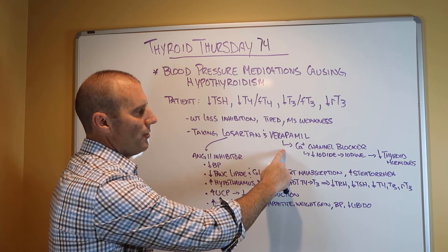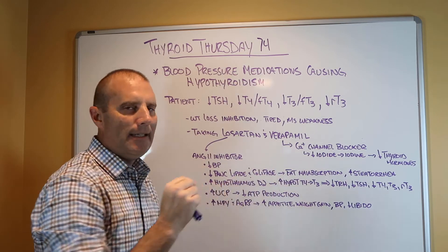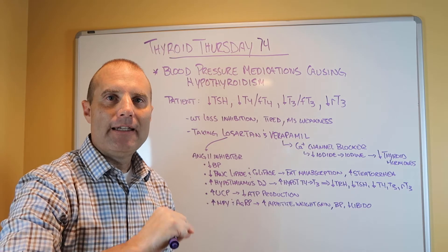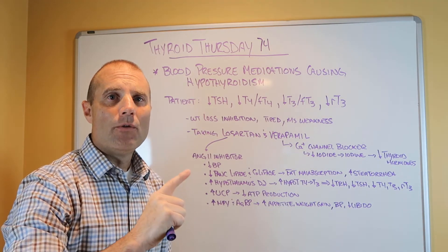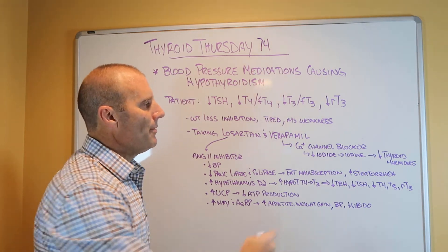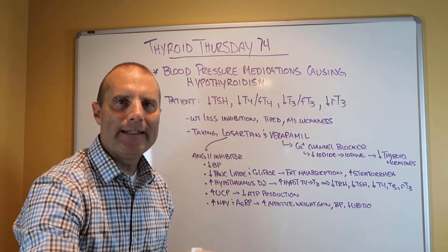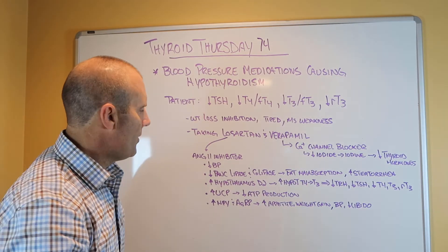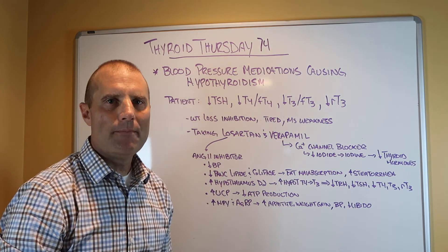Her other blood pressure medication, the calcium channel blocker Verapamil, decreases calcium getting into the cells. Specifically, it can decrease calcium into the thyroid gland, and without sufficient calcium in the thyroid gland, you can't convert iodine to iodide — and we need that iodide to produce thyroid hormones.